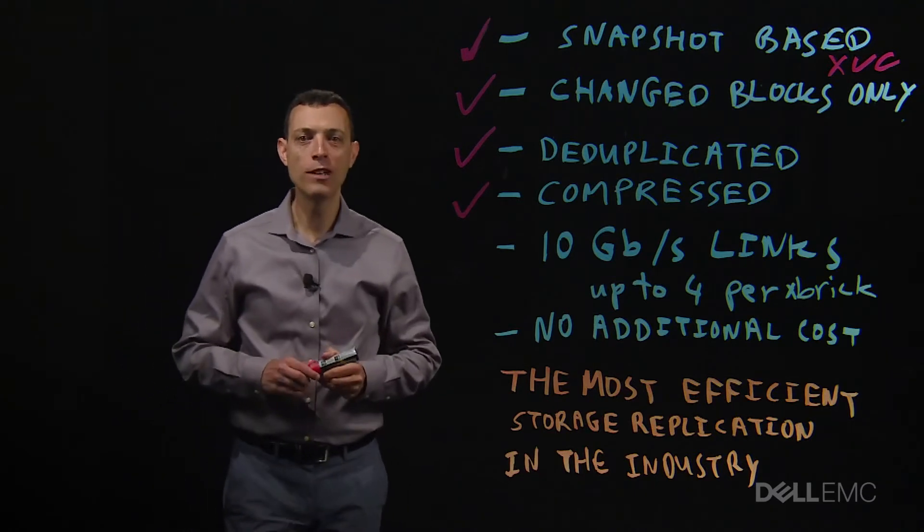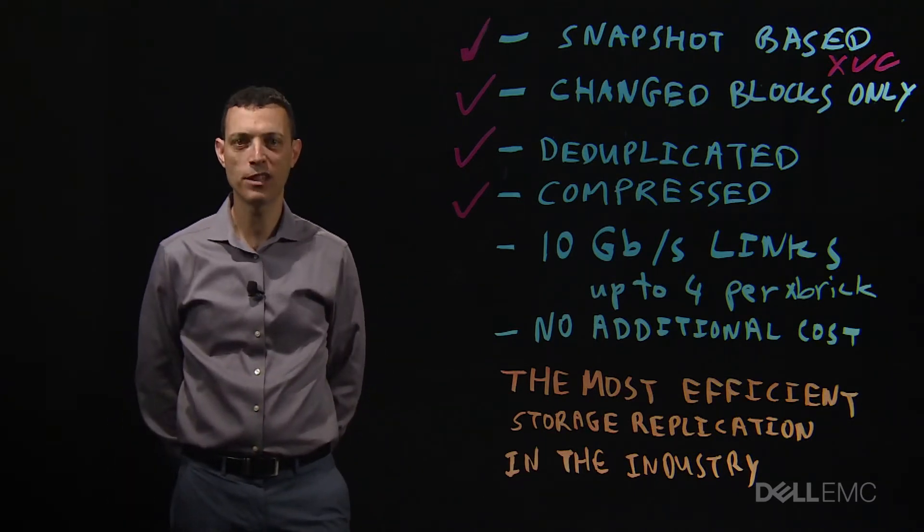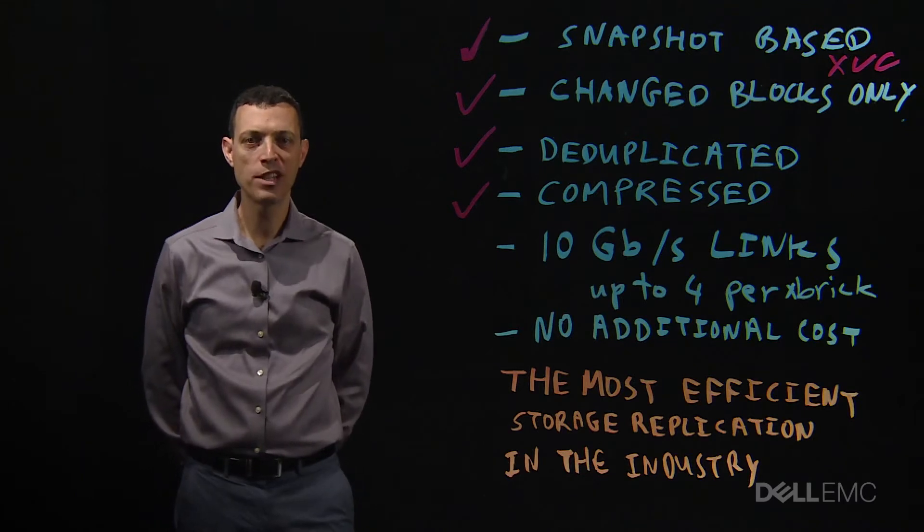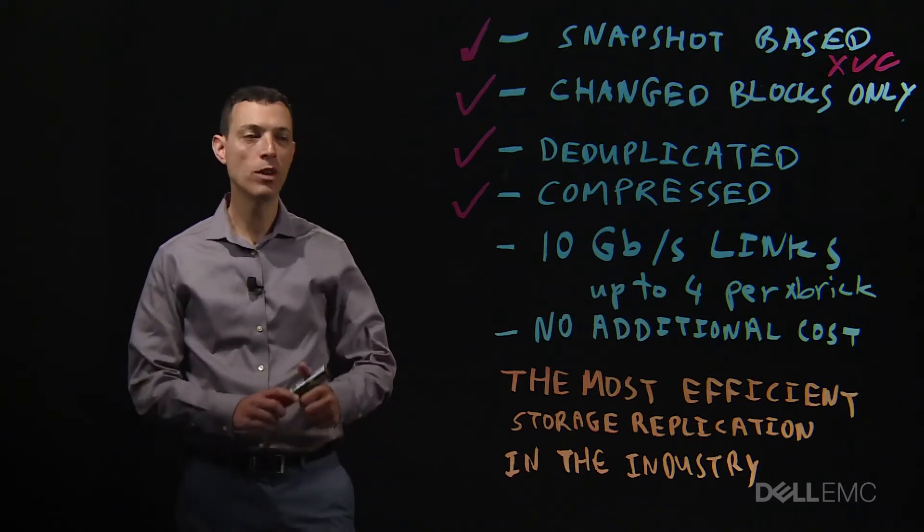Replication is done over up to four 10-gigabit links per XBrick, allowing customers to protect their businesses' most important data and workloads.